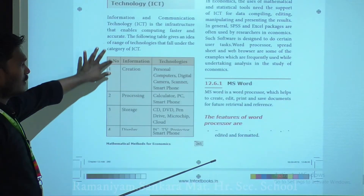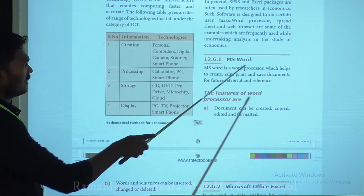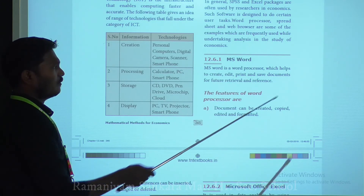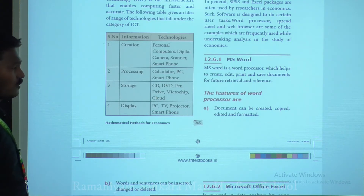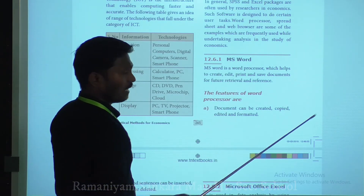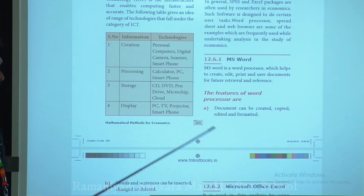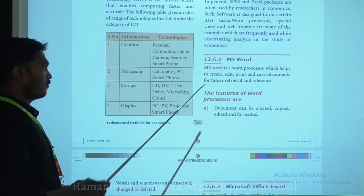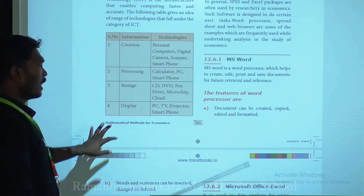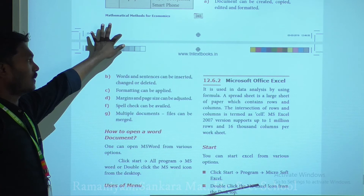Next, MS Word. MS Word is a word processor which helps to create, edit, print, and save documents for future retrieval and reference. The features of MS Word include: documents can be created, copied, edited, and formatted.